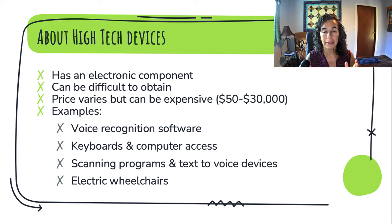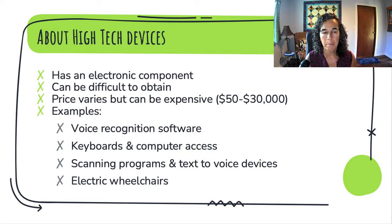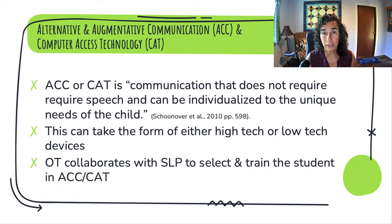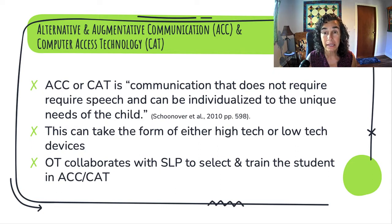So you can see that they run the gamut — it's not all computer stuff, but it includes anything that has an electronic component. We're going to start by looking at alternative and augmentative communication, AAC, and computer access technology, or CAT.